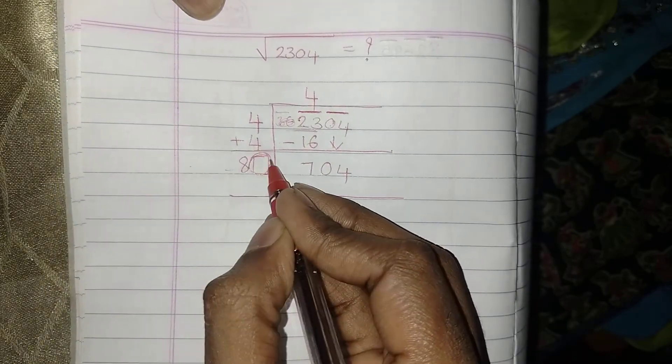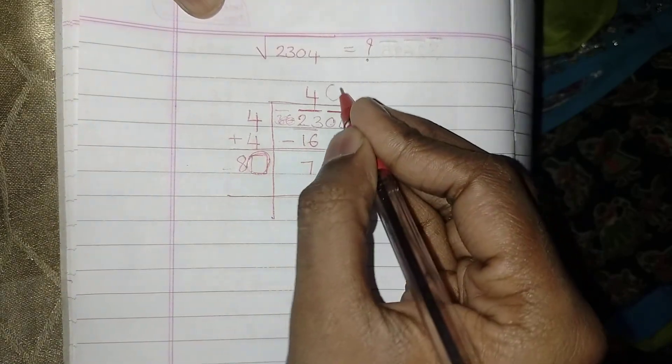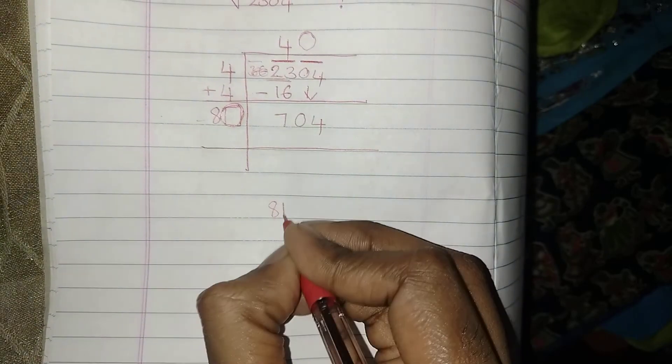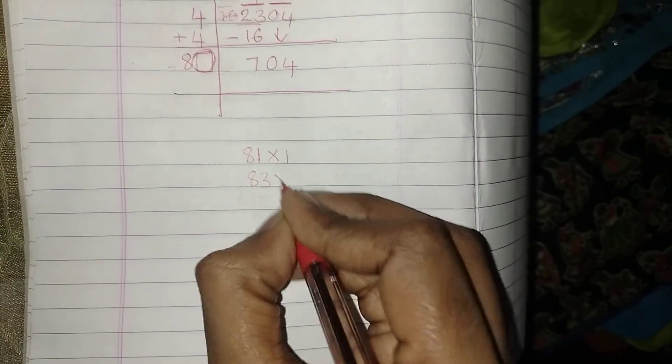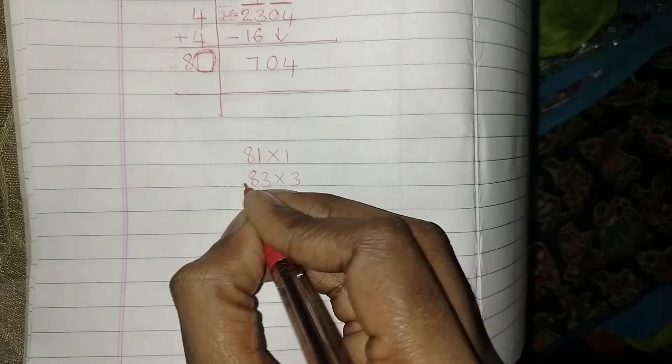Now I have to locate a number here such that when it is multiplied with the same digit, you should get the same answer. 81 into 1, 81? Less. 83 into 3, what do I get? 3 times 3 are 9, 3 times 8 are 24, 249, which is very far back to 704.